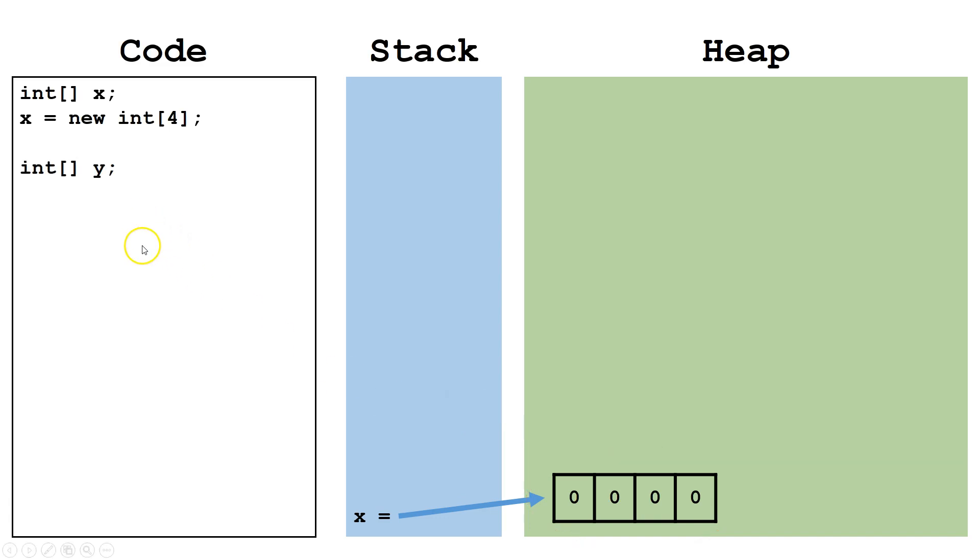Let's declare another variable y of type intArray. Here, we're going to copy the reference from the x variable to the y variable. We can see now both x and y are pointing to the same object on the heap.